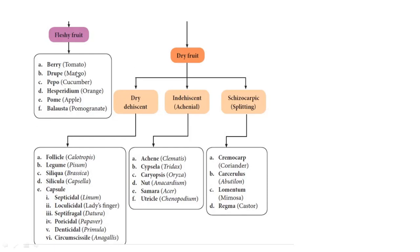These are simple fruits. Dry fruits are dry dehiscent and indehiscent. Schizocarpic. Dry dehiscent, dehiscent means they split open. Like follicle is Calotropis. Legume is pisum. Siliqua is Brassica. Silicula. Capsule. Capsules are like lady's finger, Datura, poppy, Primula, Anagallis.